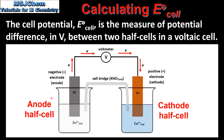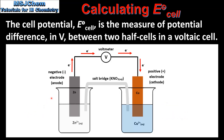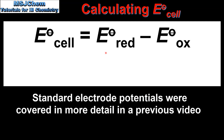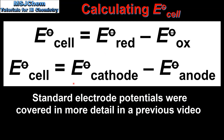Using the standard electropotential values of each half cell, we can calculate the cell potential, which is the voltage produced by the voltaic cell. Here we have the equation used to calculate the cell potential. The cell potential is equal to the standard electropotential value of the half cell that undergoes reduction minus the standard electropotential value of the half cell that undergoes oxidation. Another way of writing this equation is the standard electropotential value of the cathode minus the standard electropotential value of the anode.